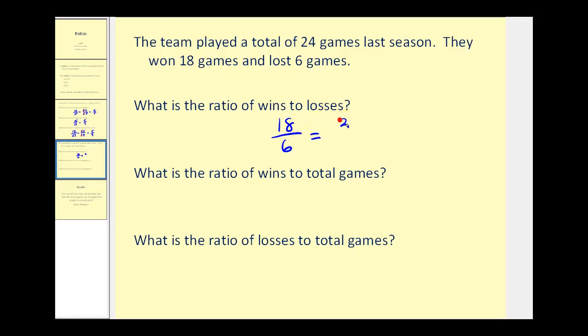18 is the same as 3 times 6, and we can write 6 as 1 times 6. So the greatest common factor between 18 and 6 is 6. Therefore the ratio is 3 to 1.